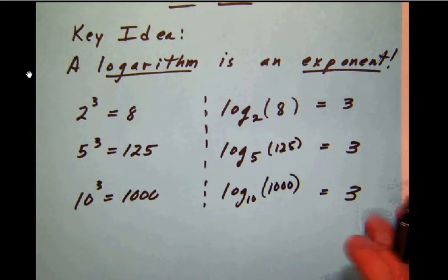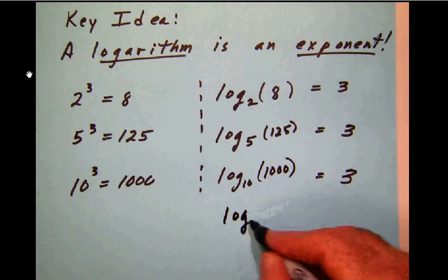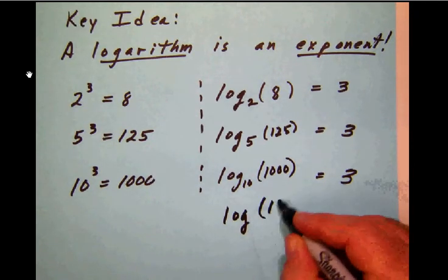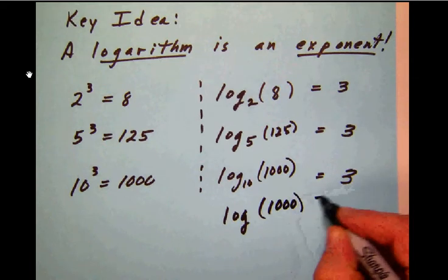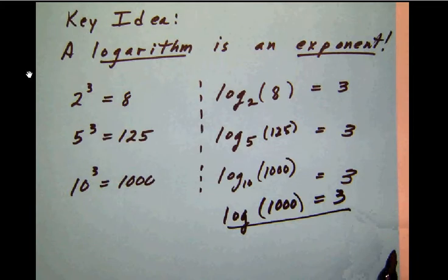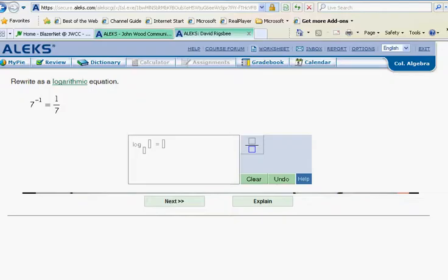Now, here's a shortcut. Whenever we have base 10 logarithms, we will simply write log without a base. Leaving the base blank implies that that logarithm base is 10. So we will say the log of 1,000 is 3. No base specified, so 10 is understood. Let's go back to Alex here and look at the problem that they have given us.